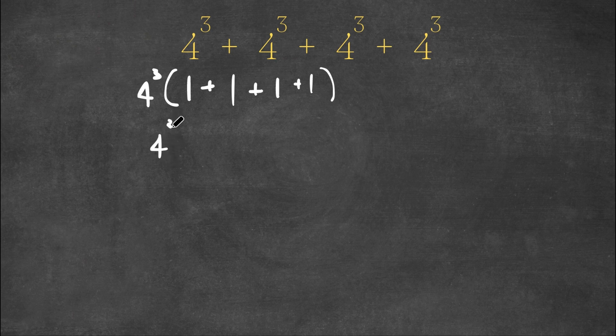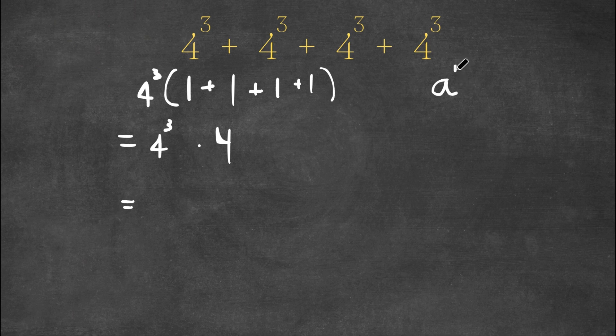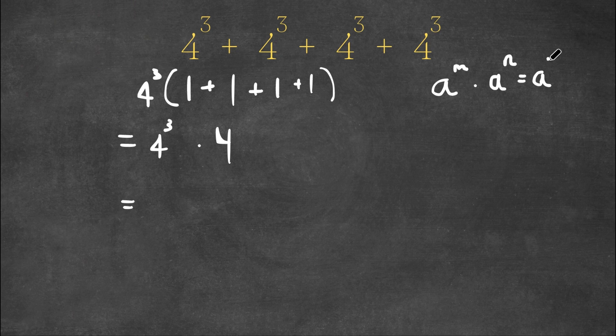So now we have 4 to the power of 3 times 4, and this is equal to, well, whenever we're multiplying an exponent, let's say we have a to the power of m times a to the power of n, this is equal to a to the power of m plus n.